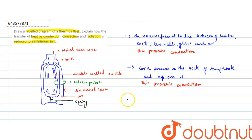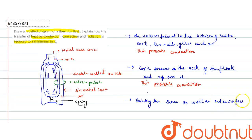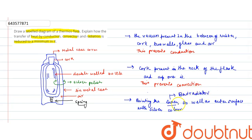The third and last one — radiation — is controlled because of painting on the inner as well as outer surface. The inner wall becomes a bad radiator and the outer wall becomes a good reflector. This prevents radiation.